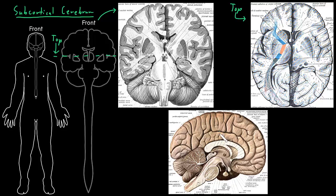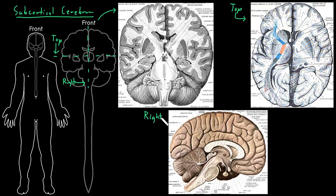In this one right here, we've actually cut down the middle. If we're looking from the front, we've cut right down and we're separating the right cerebral hemisphere from the left cerebral hemisphere. In this view, we're actually looking at it from the right — looking at the middle from the right side. We're looking at the right side of the left cerebral hemisphere.